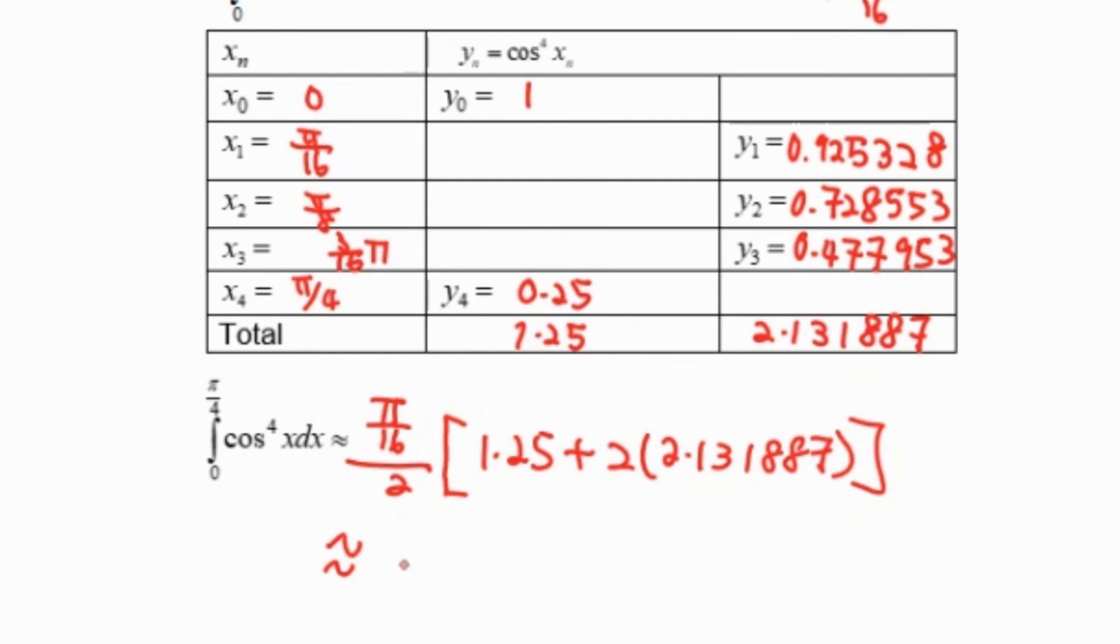Lastly, we approximate the answer to 4 decimal places. That's all.